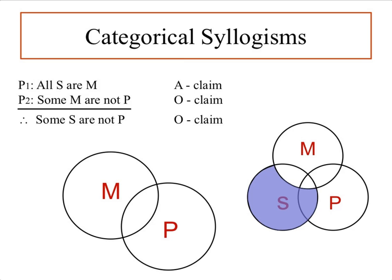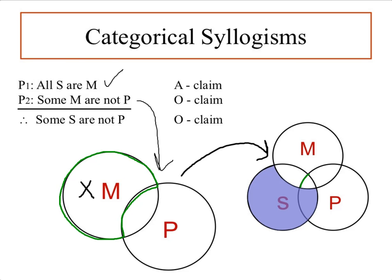We can check off that first premise as completed. Now we want to diagram the second premise, which is an O claim: some M are not P. Our O claim is represented by this highlighted green region. What we're saying is that some M — at least one M, represented by the X — is going to exist not in the P class. It's going to exist in this highlighted green region. So we want to accurately represent that over here and highlight that same region to get a better idea of where that X is going to go.